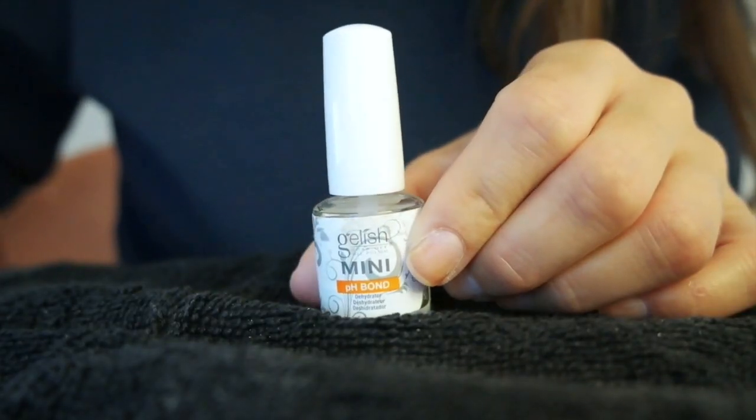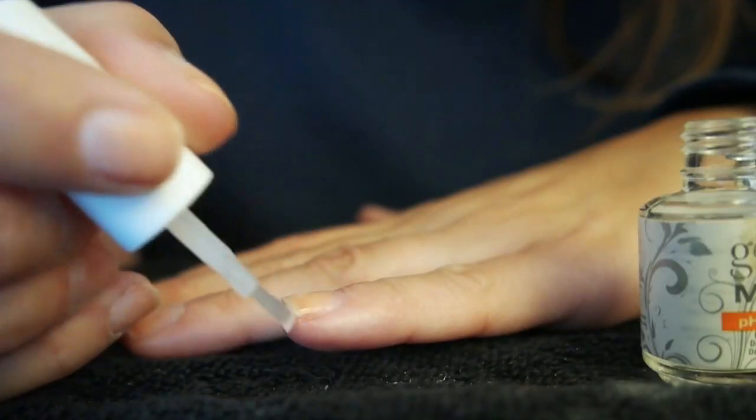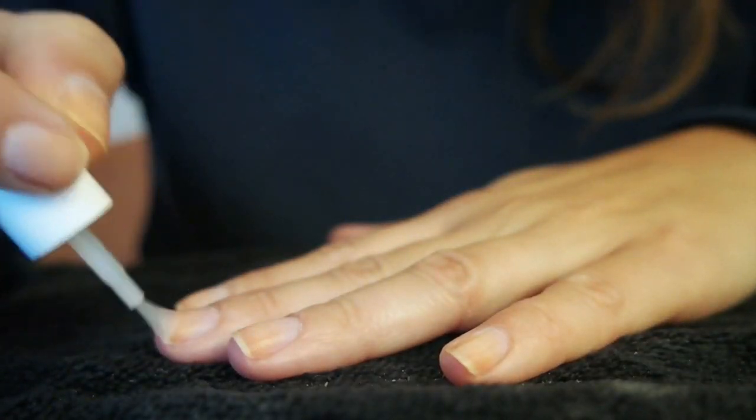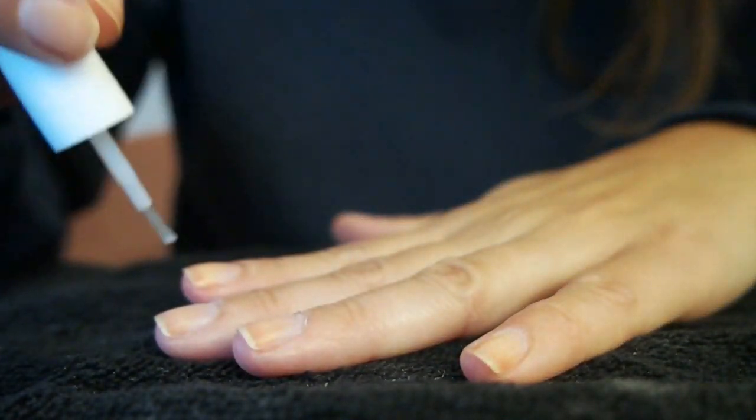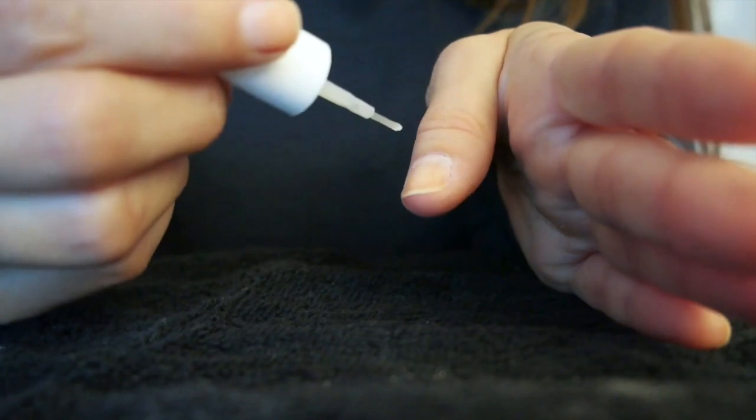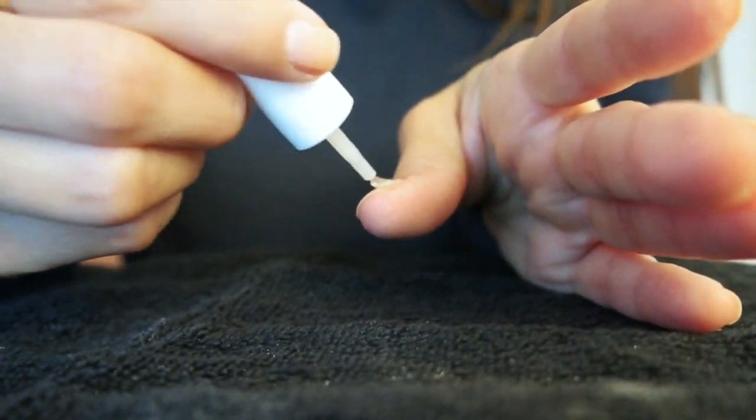Now this is a really important step because this is going to dehydrate the nail surface. It's going to remove any oil, lotion, dirt, anything that may be seen or unseen on the nail, and it also helps the polish stick. So if you don't have a pH bond, you can also use 100% acetone. It works just as well.